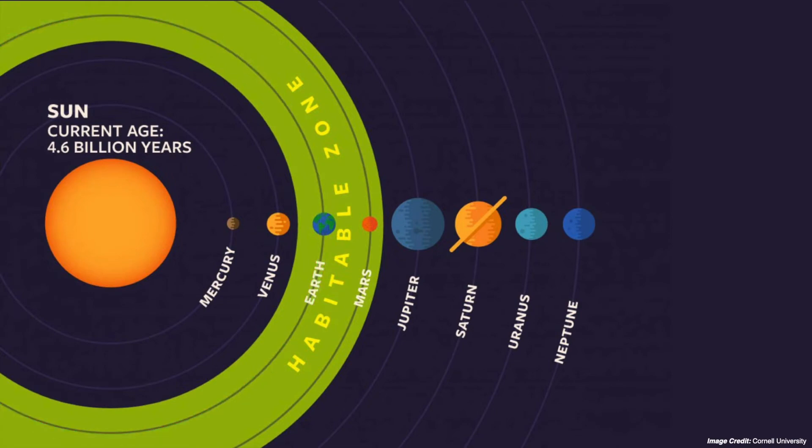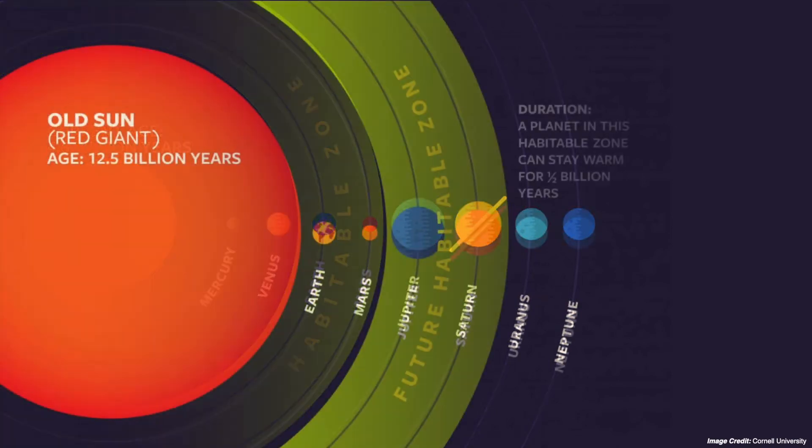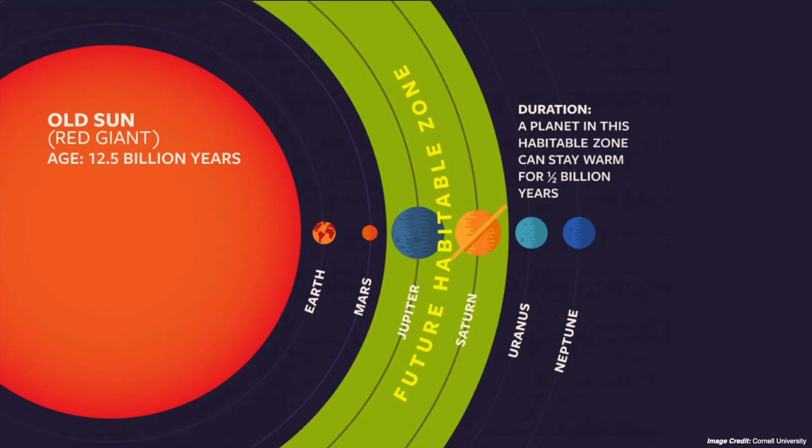In fact, our own sun is destined to become a red giant in its future. At its largest, the physical size of the sun will be just about the size of Earth's own orbit, but it will have lost about 10 to 20 percent of its original mass by this point in its evolution.